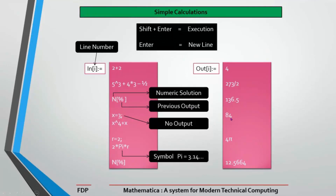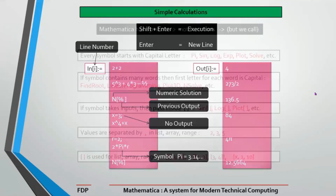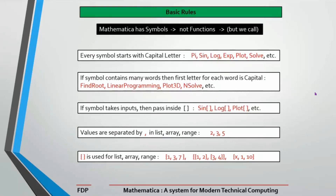Writing expressions like r=2, then 2*Pi*r, gives you 4π. If x=3, then x^4 + x gives a corresponding value. So you can do simple calculations in Mathematica just like a calculator.